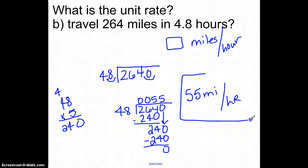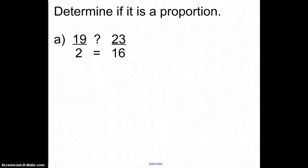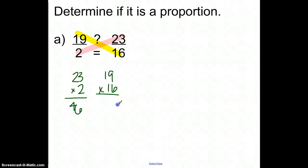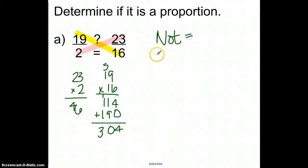To determine if something is a proportion, you have to cross-multiply to make sure the two products are equal. In this case, I would have 23 times 2, which is 46, and the other direction is 19 times 16. 19 times 16 equals 304. If it's a proportion, these two numbers would be equal. Since 46 does not equal 304, it is not a proportion.